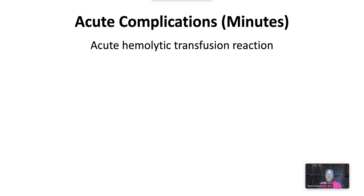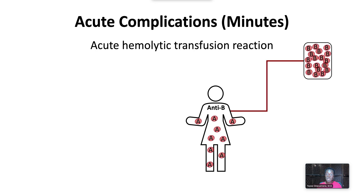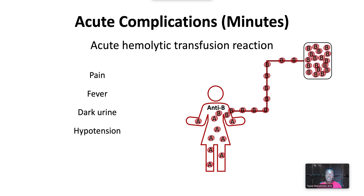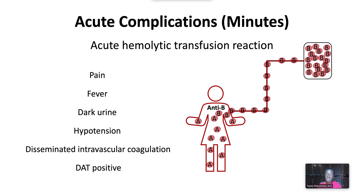Acute hemolytic transfusion reactions occur when there are preformed antibodies against red cell antigens in the recipient's plasma at the time of transfusion. This can occur with ABO-incompatible transfusion or with active alloantibodies against minor red cell antigens. As soon as a transfusion begins, the red cell antigen is recognized and destroyed. Symptoms include pain at the infusion site or flank pain, fever and chills, dark urine due to hemoglobinuria, hypotension, and disseminated intravascular coagulation, which may precipitate bleeding. If blood is drawn before all the donor cells are hemolyzed, the DAT will be positive.